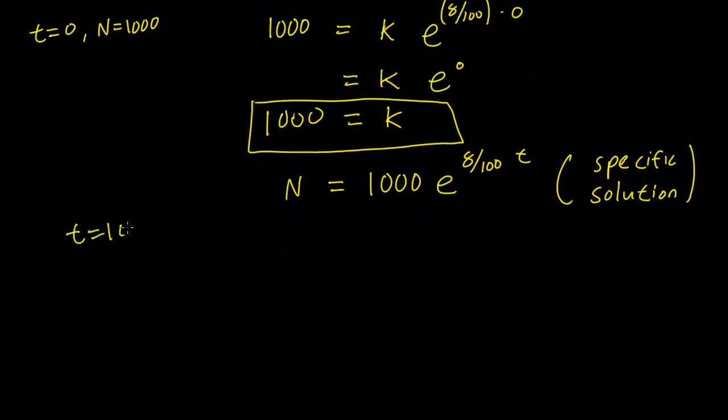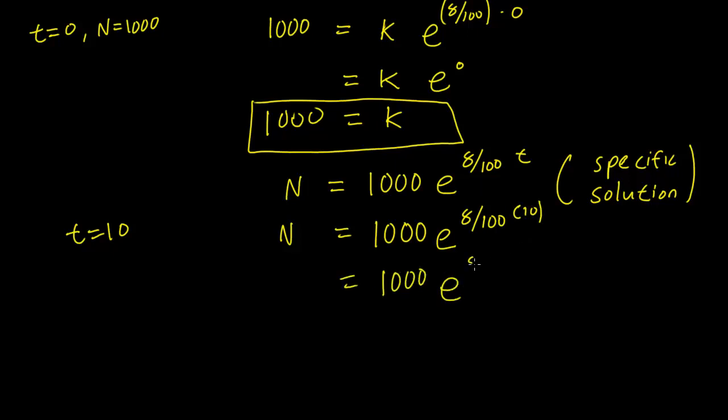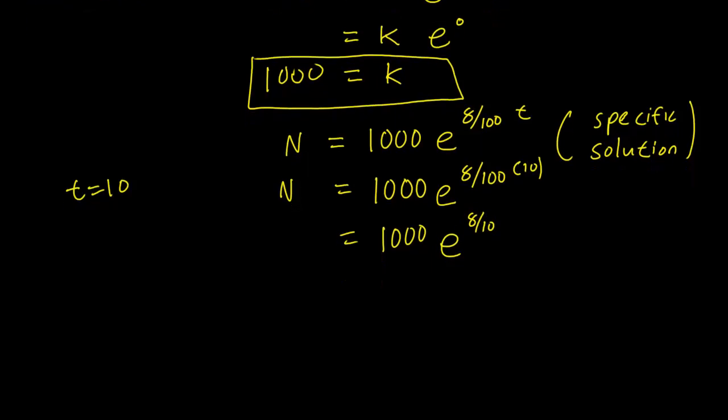Let's plug that in. We care about the money he has when t equals 10. N equals 1000 e to the 8 over 10. I don't expect you to be able to calculate these exponentials by hand, so let's cheat and see what Google has to say.